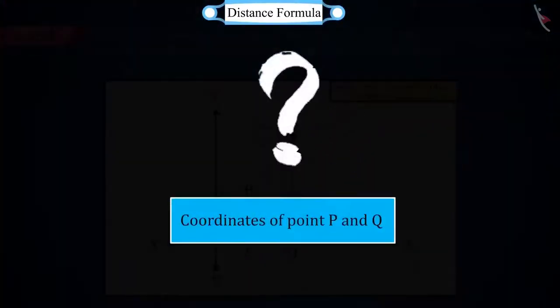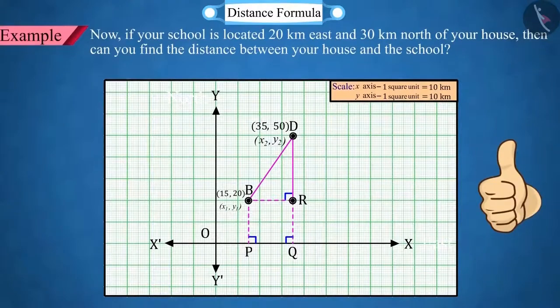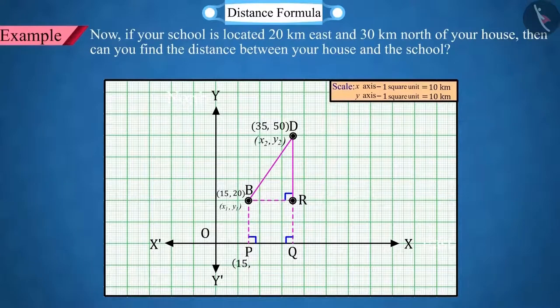Can you tell the coordinates of the points P and Q? Good. The coordinates of point P and Q are 15,0 and 35,0 respectively.